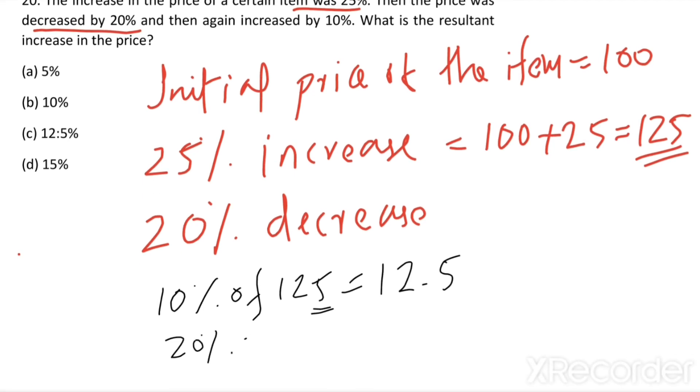Then 20% of 125 equal to 2 times 12.5, we get 25. That means 20% decrease equal to 125 minus 25 equal to 100.